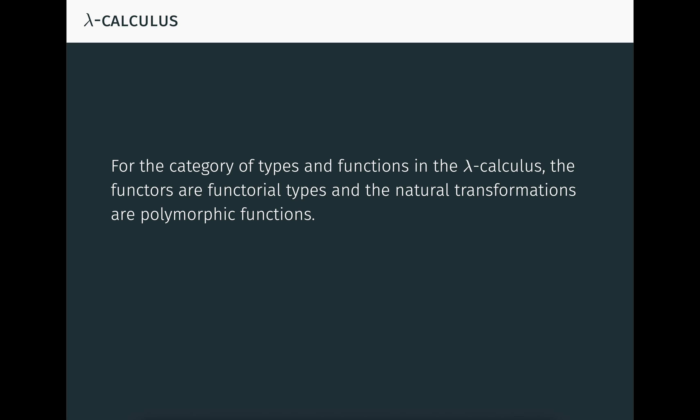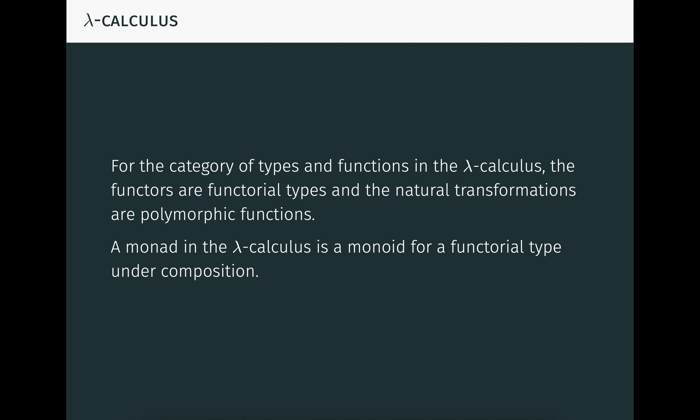Recall for the category of types and functions in the lambda calculus, the functors are functorial types, and the natural transformations are polymorphic functions. So a monad in the lambda calculus is just a monoid for a functorial type under composition.